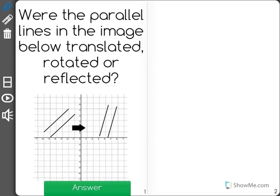Were the parallel lines in the image below translated, rotated, or reflected? Now remember, translations take place when one line, or two parallel lines, just move to another place, in this case down and to the right. That would be a translation.